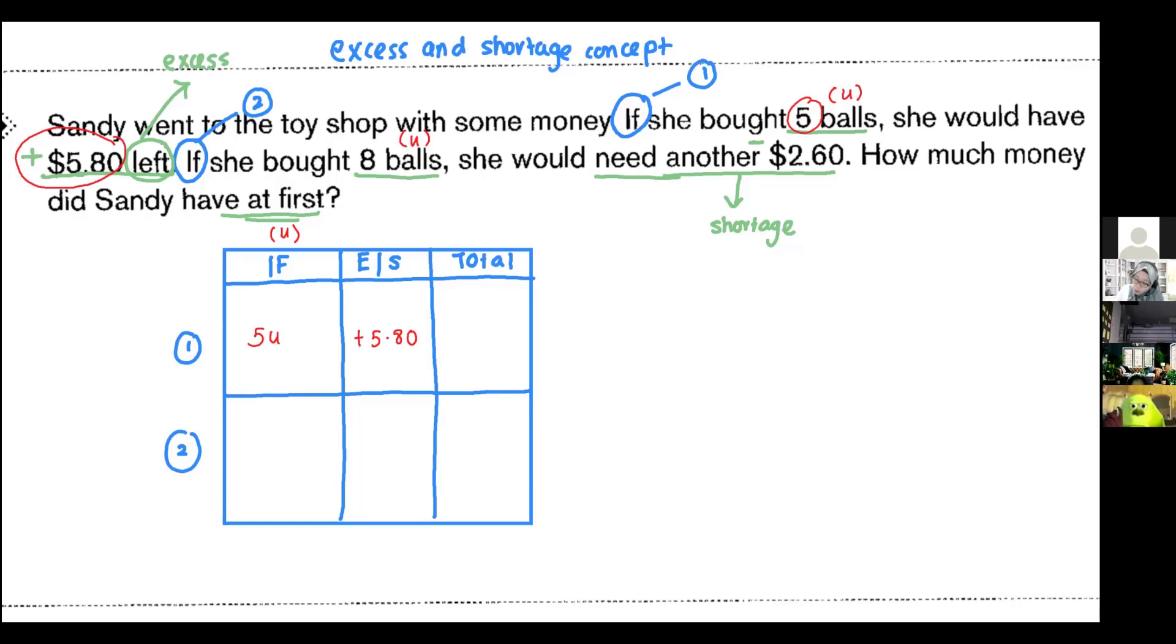Then the second if, she bought eight balls. So eight balls means eight units of balls. And then she need another $2.60, which is minus $2.60. Like that.